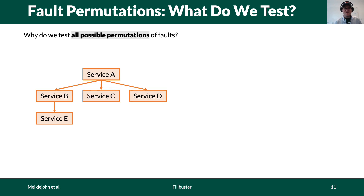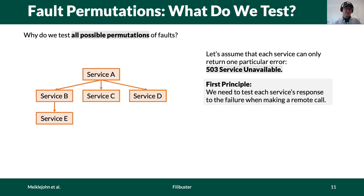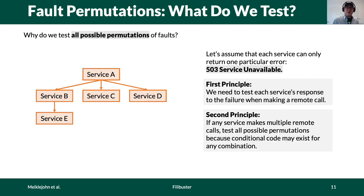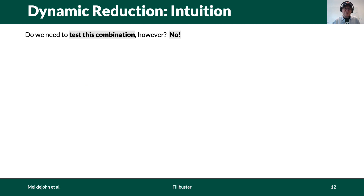We need to test all failure types and all possible permutations of failures — let's see why. In our ride-sharing example with services A through E, assume each service can only throw one particular error: a 503 service unavailable. From first principles, we need to test how each service responds to a failure of one of its dependents — what B does when E fails, and what A does when B, C, or D fail. We also know developers can write conditional statements, such as at service A: if B and D fail together, do a special thing. So we need to test all permutations of failures for requests issued by A. But do we have to test the combination where D and E fail together? It turns out we don't.